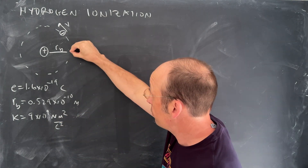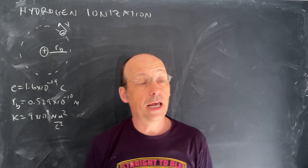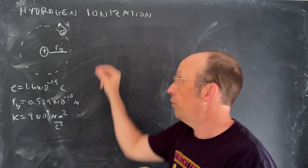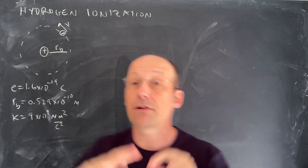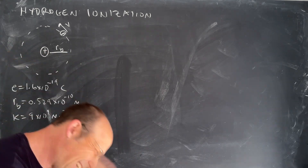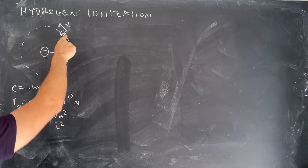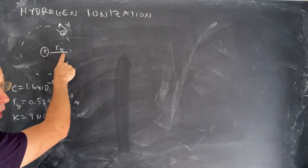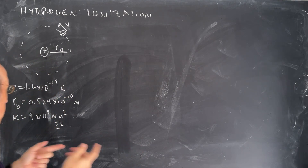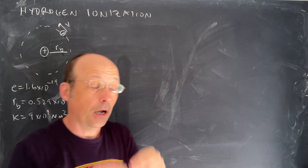We're going to calculate how much energy it would take to take that electron and move it an infinite distance away, and I'm going to do it two ways. We call this ionization — if you take an electron away from an atom, then it's ionized. So we're going to start with a proton and an electron at the Bohr radius. The Bohr radius is where the electron would be if it were orbiting, and that is 0.529 × 10⁻¹⁰ meters.